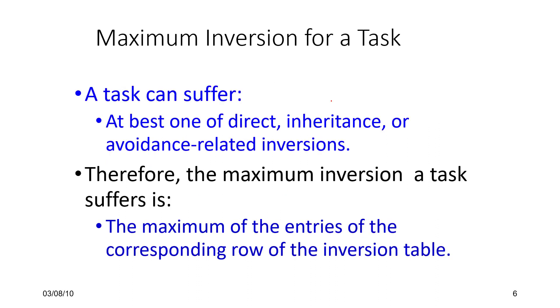The maximum inversion that a task can suffer is at best one of a direct, inheritance, or avoidance related inversions from the blocking rule that we have seen. Therefore, the maximum inversion a task will suffer is the maximum of the entries of the corresponding row of the inversion table. You take any task Ti, look at the ith row of the inversion table, and find its maximum. You have three different tables: one for direct inversions, one for inheritance inversions, one for avoidance related inversions. We look at all three rows, find the maximum. That is the worst case for how long a task can suffer an inversion, which we have seen can happen only once.